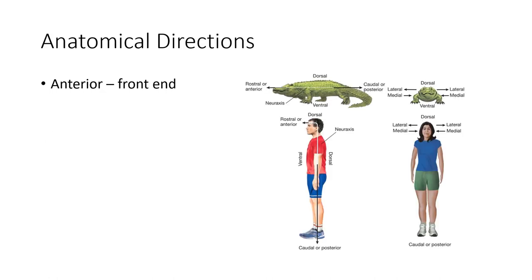As we move through this chapter and future chapters, we'll be talking about different parts of the brain in relationship to other parts. So it's important that we establish what anatomical directions are — so we have an idea of where a certain body part is relative to others around it. First, we'll look at anterior, which means toward the front end. Here we're looking at both an alligator and a person, so we have a better idea of what that really means.